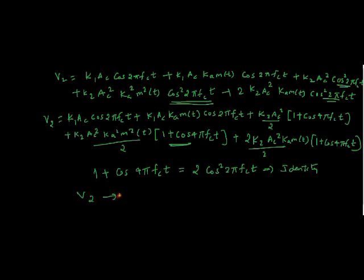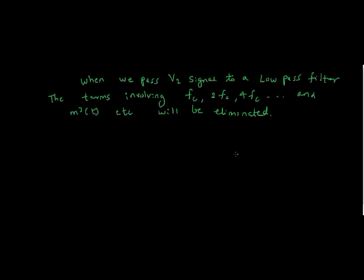That signal which we get out of the non-linear device, that we pass it to the low pass filter. V2 we pass it to the low pass filter. We have passed the AM signal to the non-linear device. We got the non-linear signal out of the non-linear device that is V2. We then pass the V2 signal to the low pass filter. As we all know the low pass filter is a filter which passes only low frequencies but eliminates high frequencies.